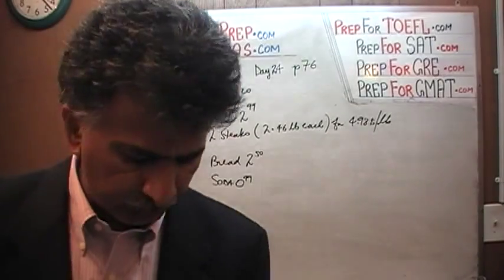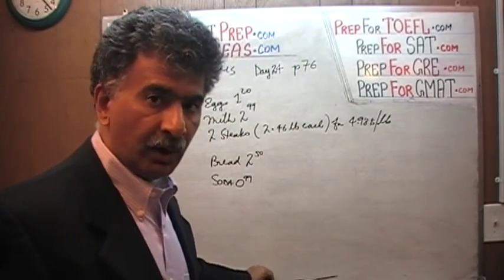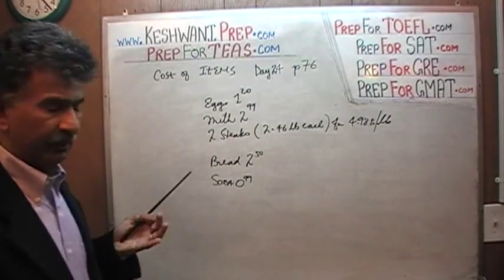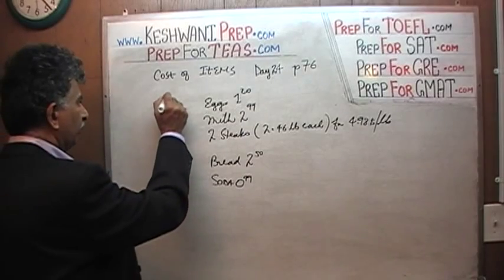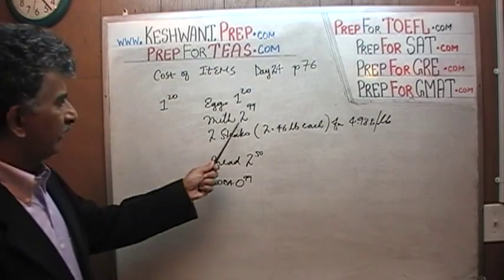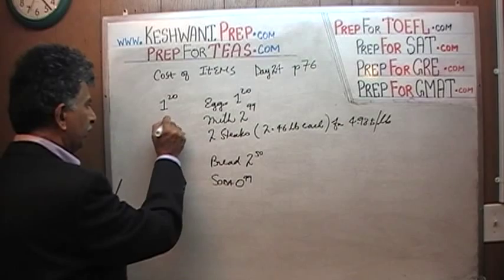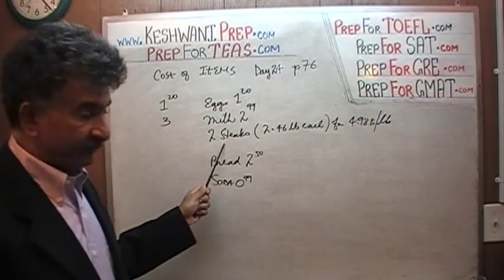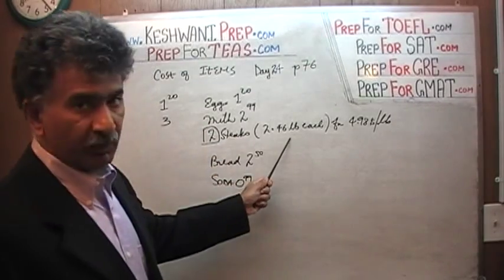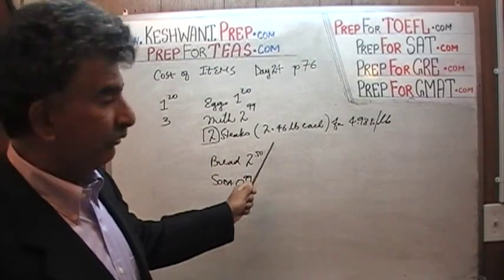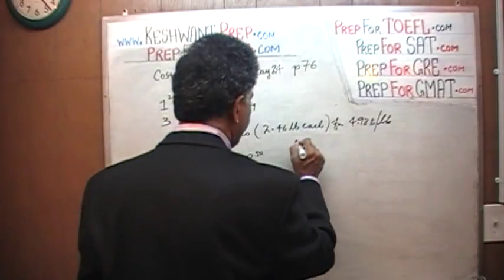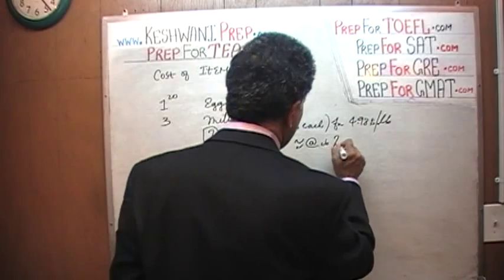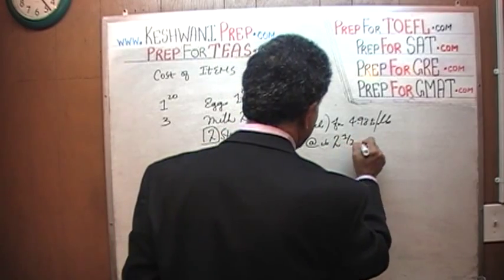So let's take a look at this one more time. This is where we are going to do the rounding — this is where the art comes into it. Eggs are $1.20; I'm just going to pretend it's $1.00. Milk is $2.99, rounded to $3.00. Now pay attention: we are buying two steaks, and each one of them is 2.46 pounds. We are going to pretend that each is approximately 2.5 pounds each.